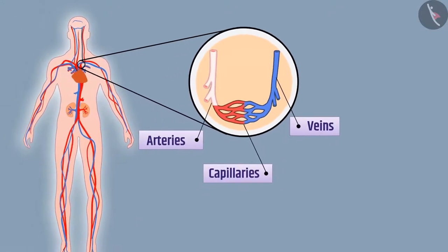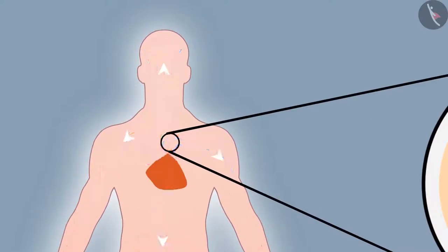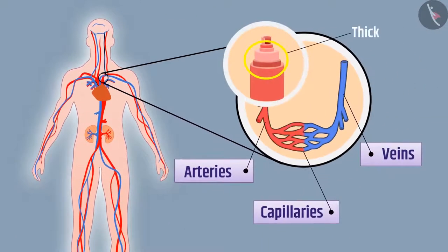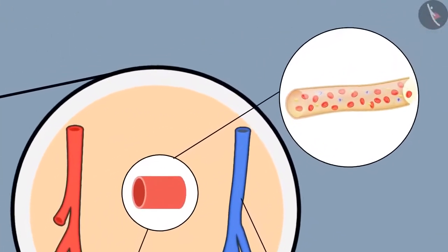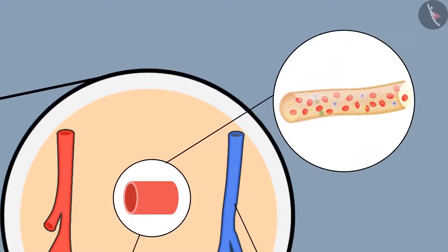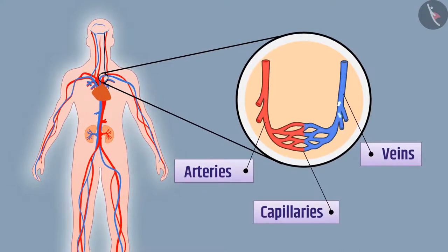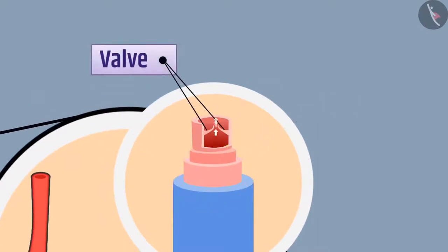Arteries carry oxygenated blood from the heart to various parts of the body. Since the heart pumps the blood into arteries, blood flows in the arteries with high pressure. The walls of the arteries are thick and flexible so that they can bear high pressure. Each artery is divided into small vessels. The wall of the smallest vessel is unicellular thick, which allows the exchange of substances between the blood and the cells easily. Capillaries join to form veins that carry deoxygenated blood from various parts of the body to the heart. The walls of the veins are thin and have valves so that blood flows in one direction.